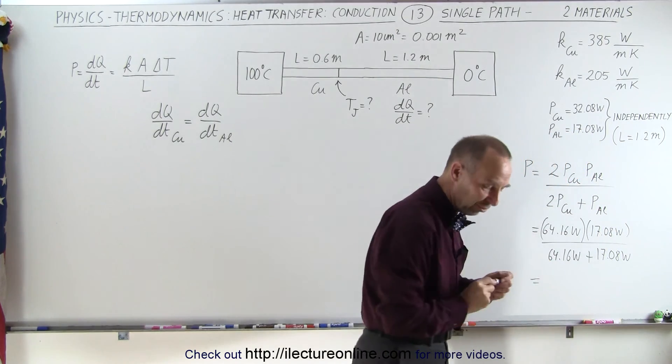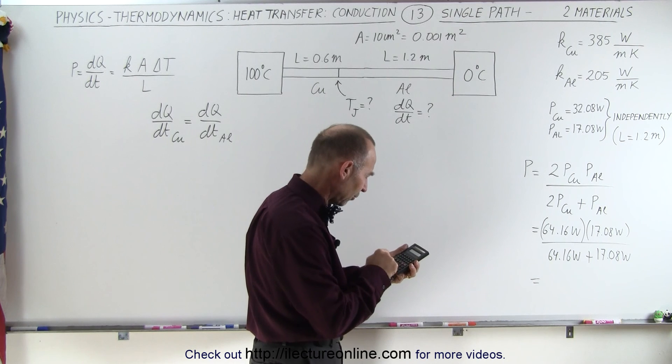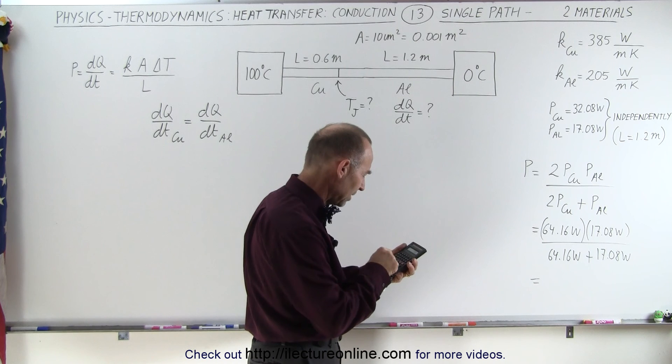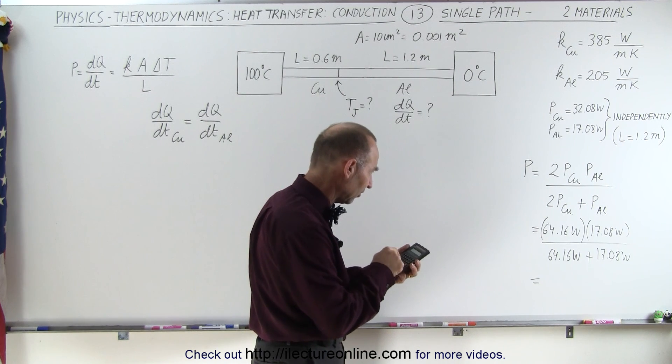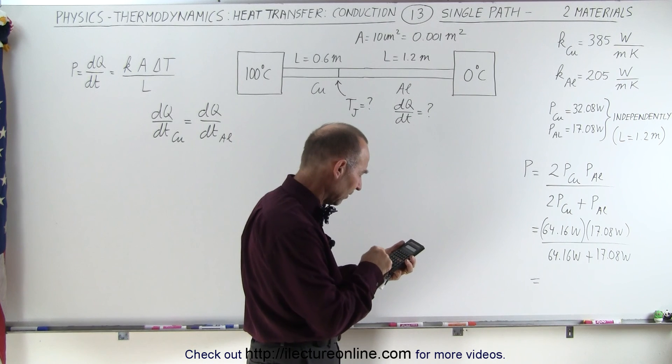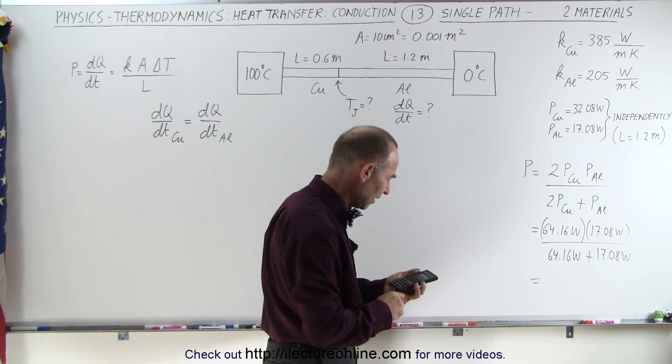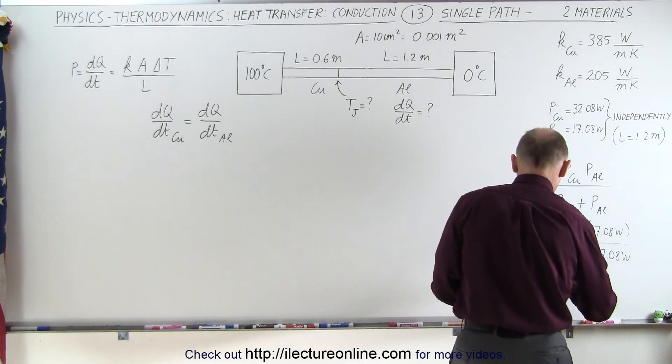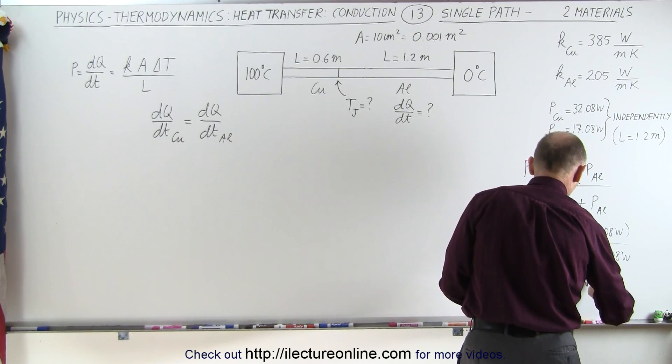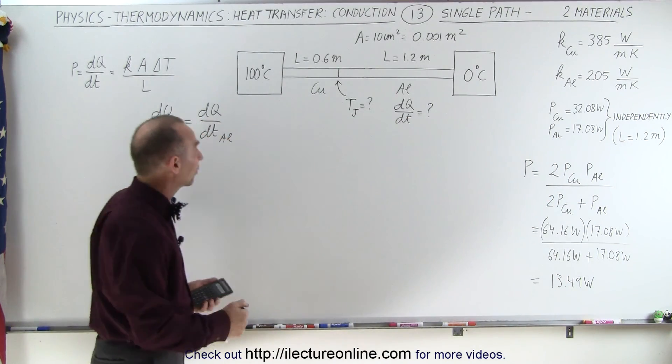So 64.16 times 17.08 divided by the sum 64.16 plus 17.08 equals, and we get 13.49 watts. That was easy. Now let's see if this is correct, see if it works.